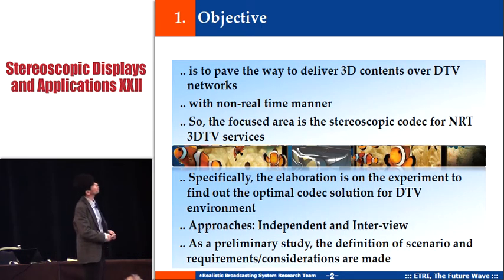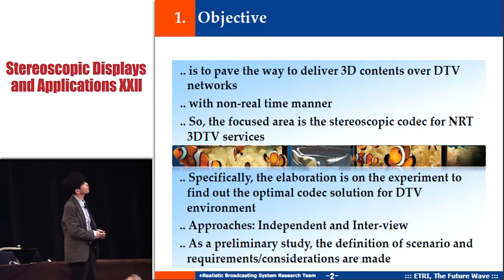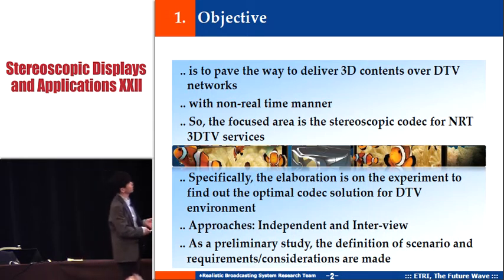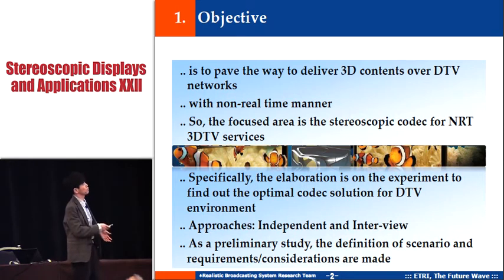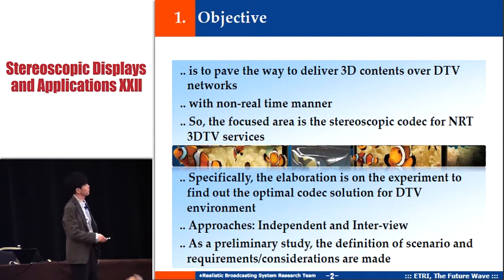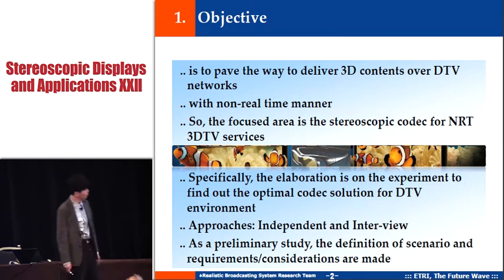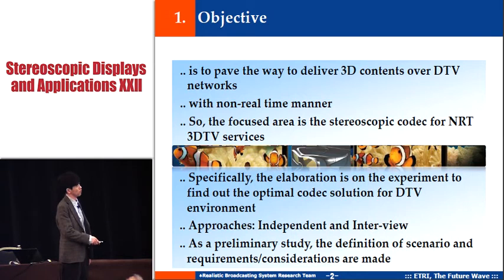In this paper, we would like to find a solution to deliver 3D content over DTV networks in a non-real-time manner. The focus area is the stereoscopic codec for NLT 3D services, specifically finding the optimal codec for ATSC. The approaches evaluated are independent and inter-view coding. As a preliminary study, we also defined some NLT scenarios along with requirements and considerations.